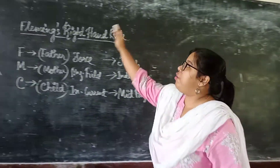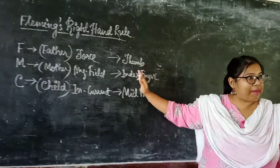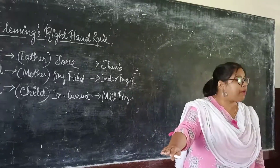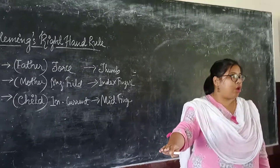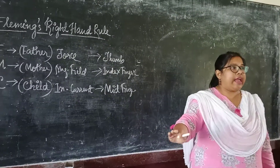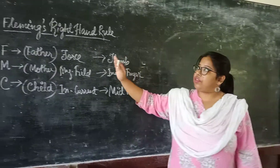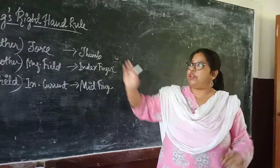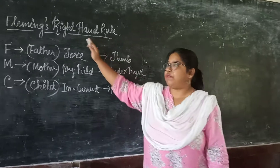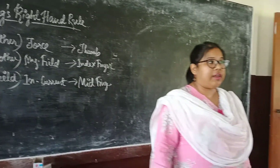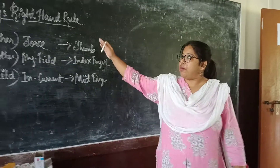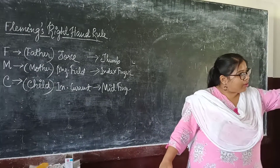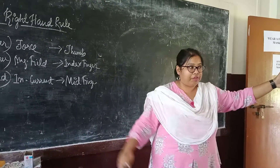This is the rule that you have to remember, which will be applicable in the working principle of the AC generator. Now, the Father, Mother, Child mnemonic is applicable for Fleming's right-hand rule and left-hand rule both.